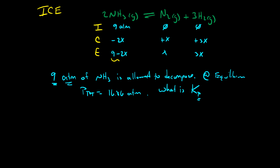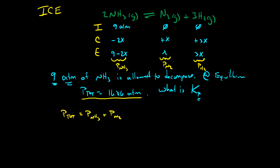Nine minus two X is the equilibrium pressure of ammonia, X is the equilibrium pressure of nitrogen, and three X is the equilibrium pressure of hydrogen. We're also given that the total pressure is 16.86 atmospheres. The total pressure is always calculated by adding up the pressures of all the gases — so it's the equilibrium pressure of ammonia plus the equilibrium pressure of nitrogen plus the equilibrium pressure of hydrogen. Since we have expressions for each of these pressures, we can make some substitutions.